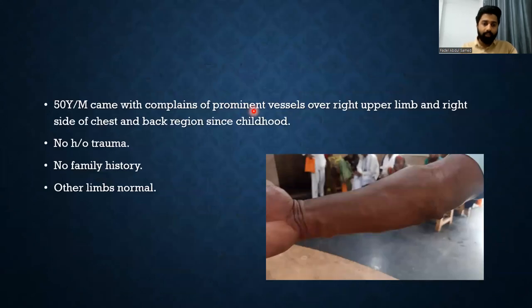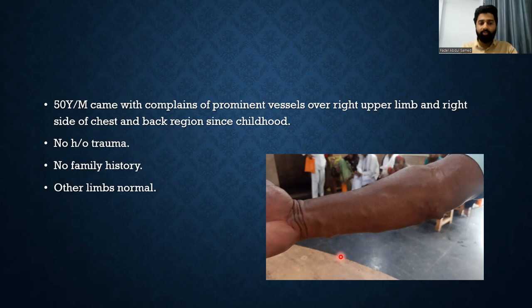I am presenting a case of a 50-year-old male who came with complaints of prominent vessels of the right upper limb and right side of chest and back region, which was present since childhood. He had no history of trauma, no family history, and other limbs were normal.